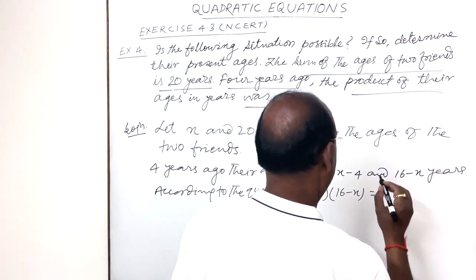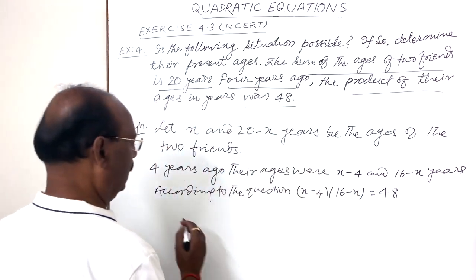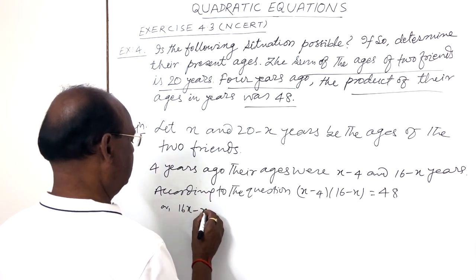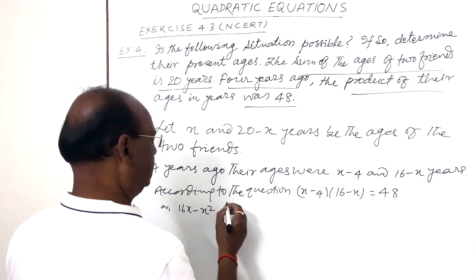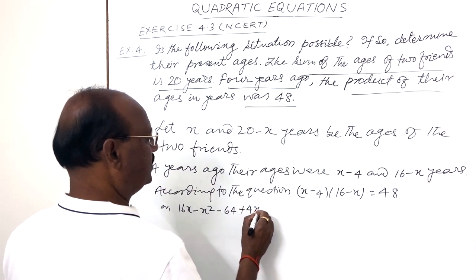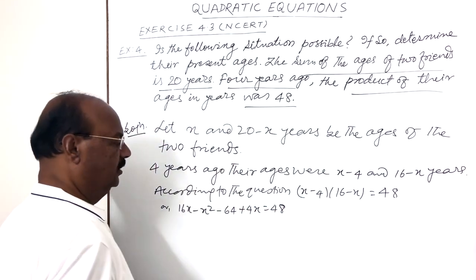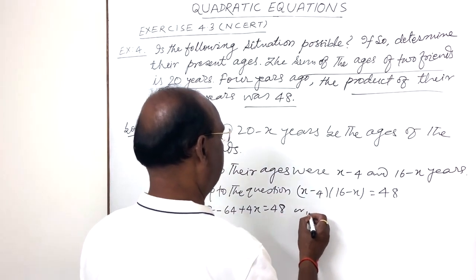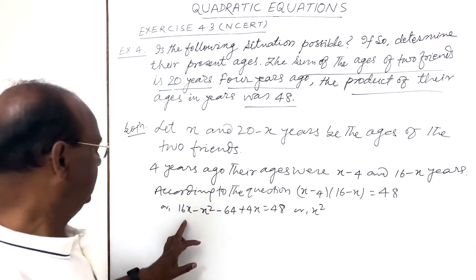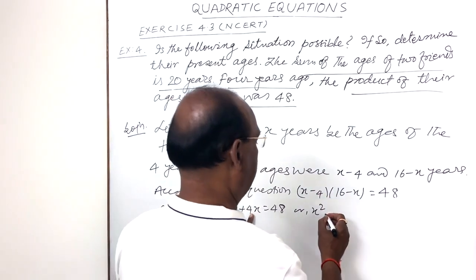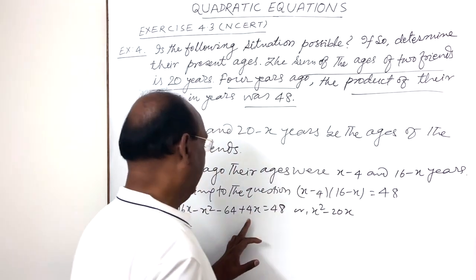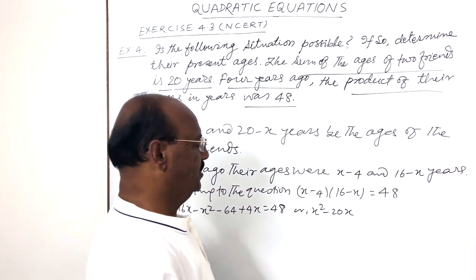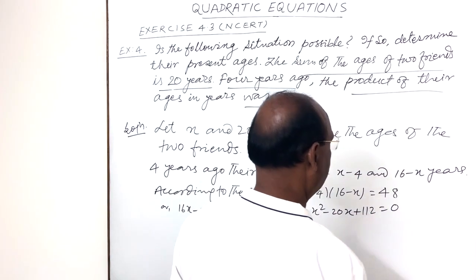According to the question, the product of their ages four years ago is: (x minus 4) into (16 minus x) equals 48. Multiplying these two factors: 16x minus x squared minus 64 plus 4x equals 48. Transposing all terms to one side, we get x squared minus 20x plus 112 equals 0.